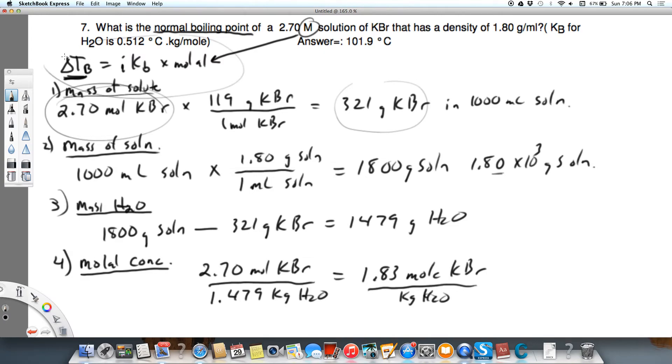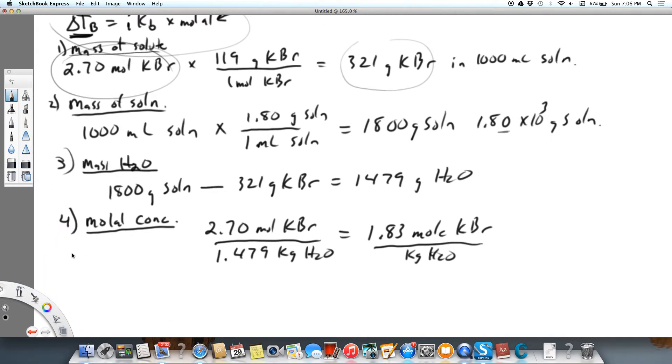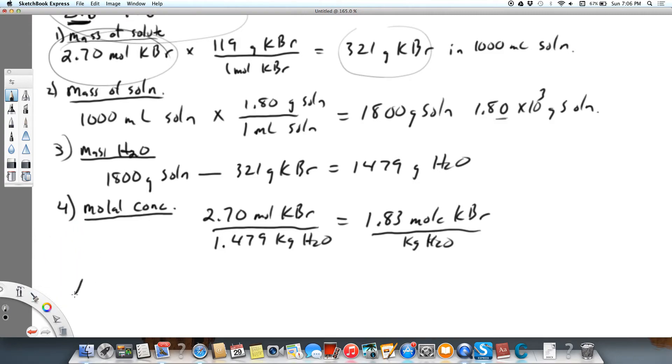Now I can plug that back into my original equation, and it's going to be much easier now. So again, the change in boiling temperature is going to equal I times Kb times little m. So that's going to equal 2. My Kb was given as 0.512 degrees Celsius per molal times 1.83 molal. That cancels.